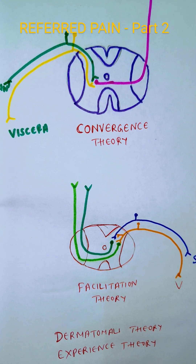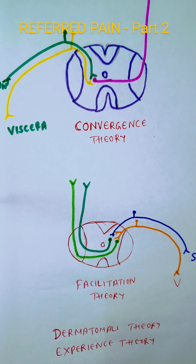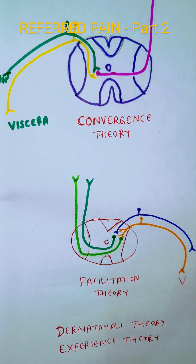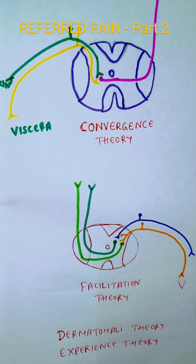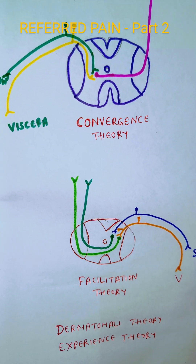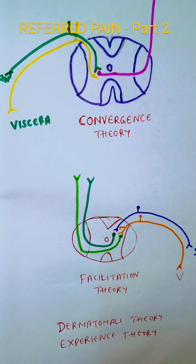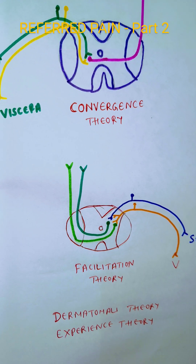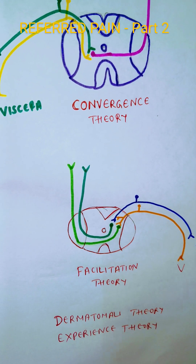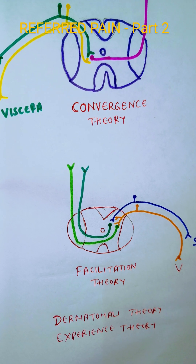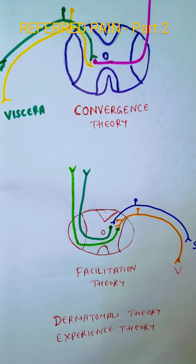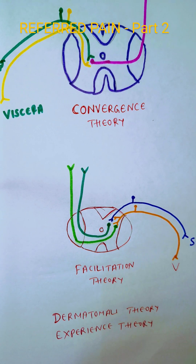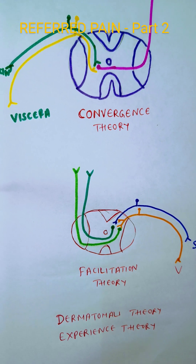The dermatomal theory: in myocardial infarction, the blood supply to the myocardium is affected, but the pain is felt specifically in the inner aspect of the arm. This is because the heart and the inner aspect of the arm both developed from the same embryonic segment. A dermatome is a part of the skin that arises from a single embryonic segment — and that same segment gave rise to the heart as well. That is why pain in the heart is initially felt in the inner aspect of the arm.